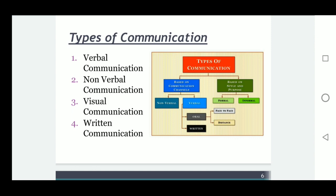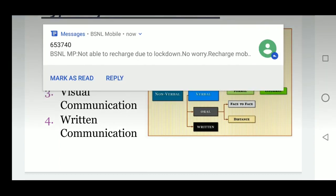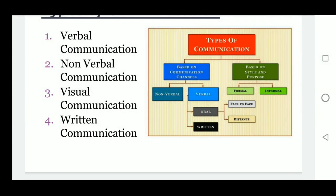The types of communication are shown in a diagram. Based on communication channels, communication is divided into verbal and non-verbal. Verbal is further divided into oral and written, and oral is further divided into face-to-face and distance communication. Based on style and purpose, communication is divided into formal and informal.